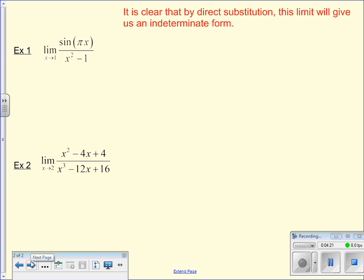So, it is clear by direct substitution, the limit will give us an indeterminate form. So if we plug in one, one squared minus one gives us zero in our denominator. Sine of pi is zero, so I get zero over zero. Indeterminate form, I cannot do that. So, I can apply L'Hopital's rule.